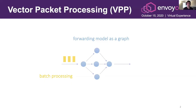Before we dive in, and in the interest of those of you who are not familiar with VPP, a very quick introduction. VPP is an L2 to L7 networking stack which at its core leverages two important ideas: vectorized packet processing and the modeling of forwarding as a directed graph of nodes. When done correctly, this ensures really efficient use of a CPU's caching hierarchy and consequently minimal overhead per packet when doing software forwarding.